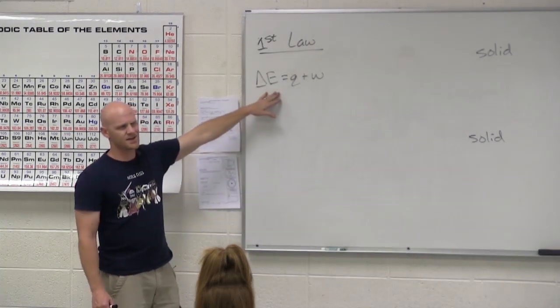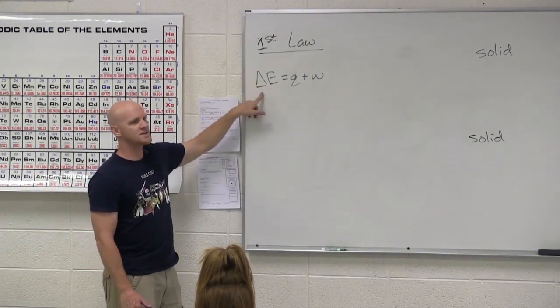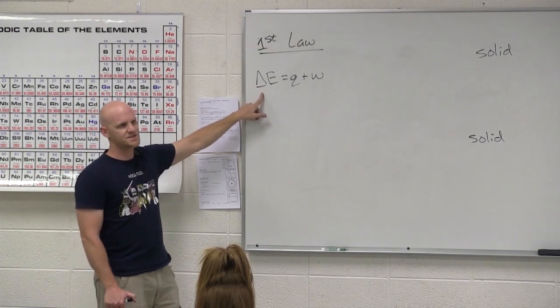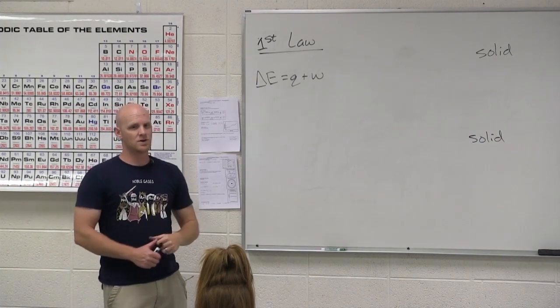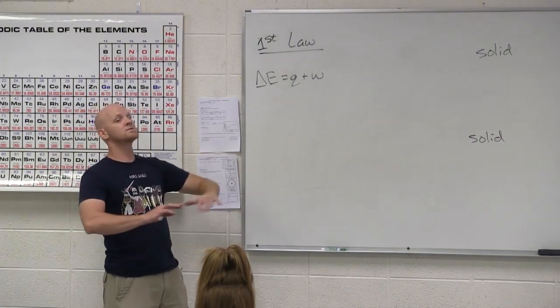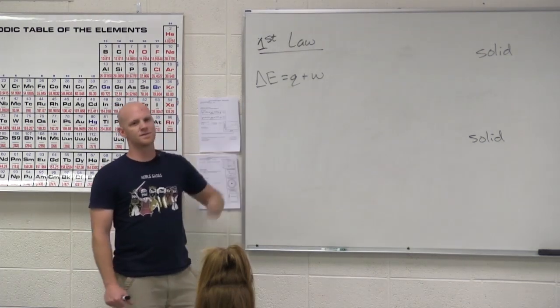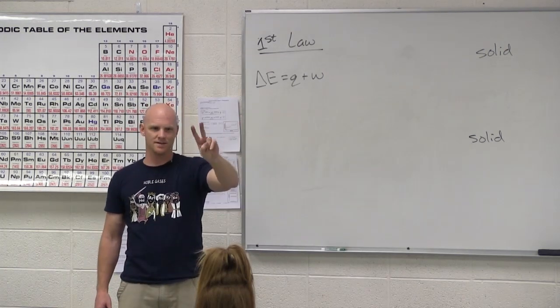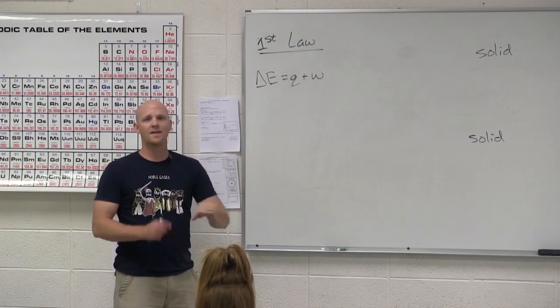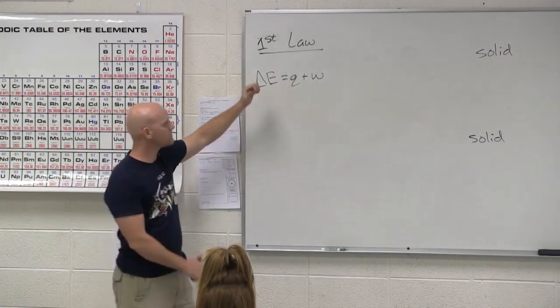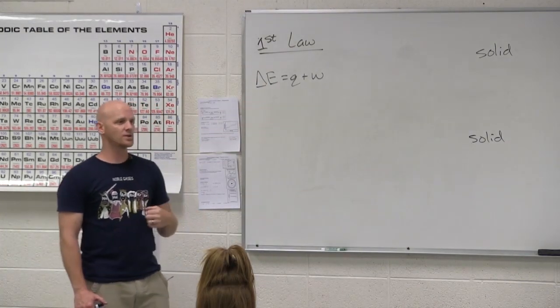Mathematically though we write it just like this. Delta E here stands for the change in internal energy. Change in internal energy, most commonly in this context you'll be talking about it in terms of a gas. So it turns out we'll talk about this equation in the context of defining the universe as having exactly two things in it: the system and the surroundings. The system is what you're looking at. The surroundings is everything else in the entire universe. So in this case delta E is that change in internal energy of whatever system you are looking at.